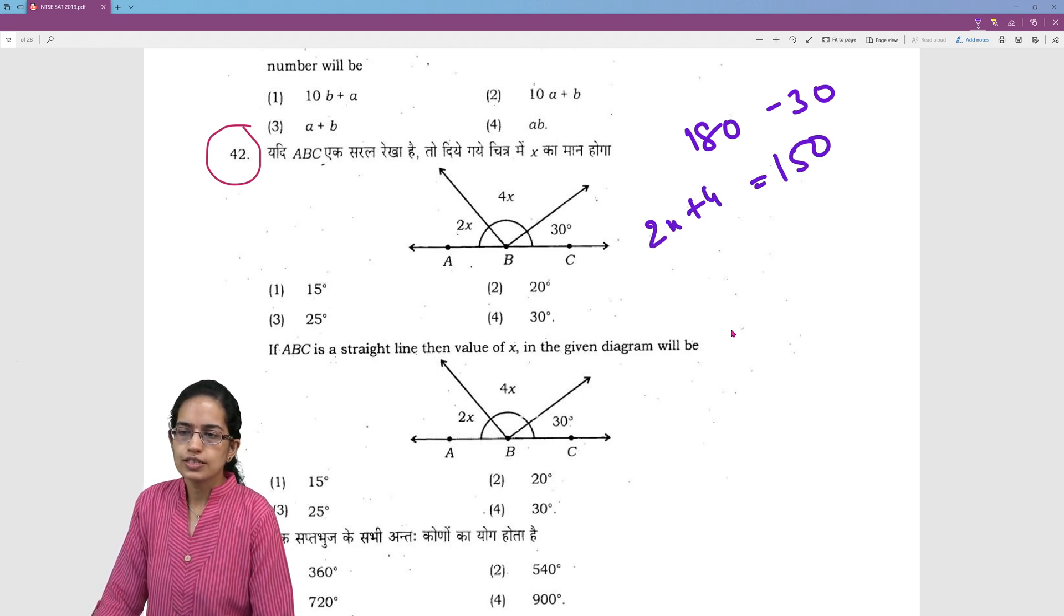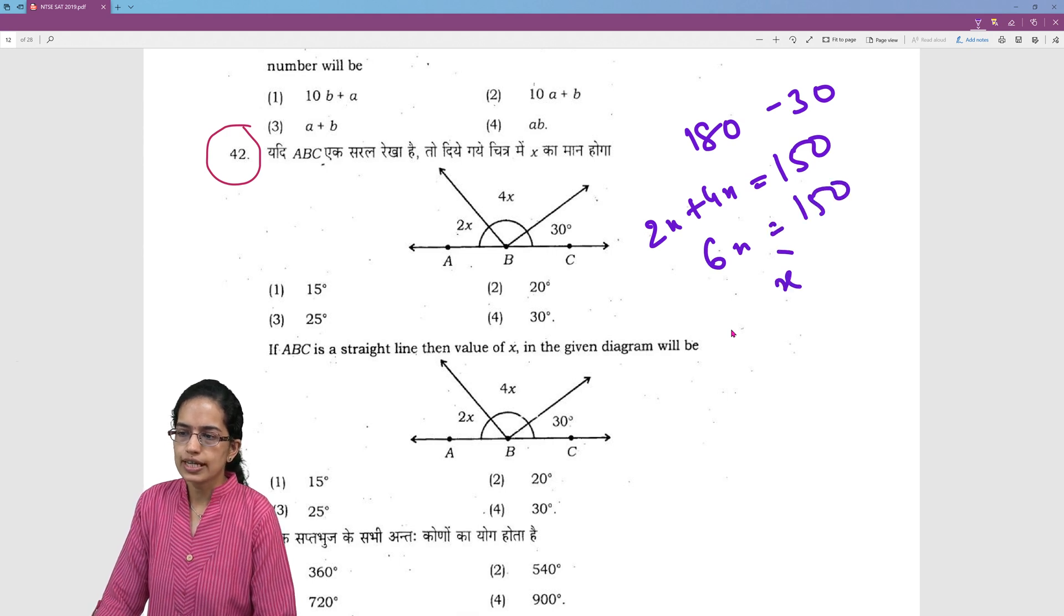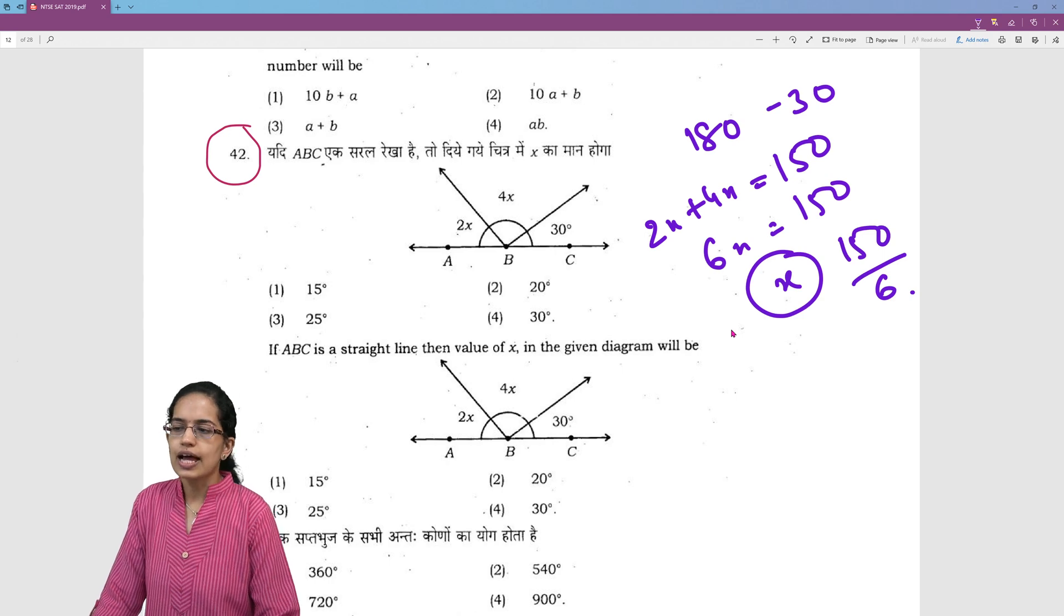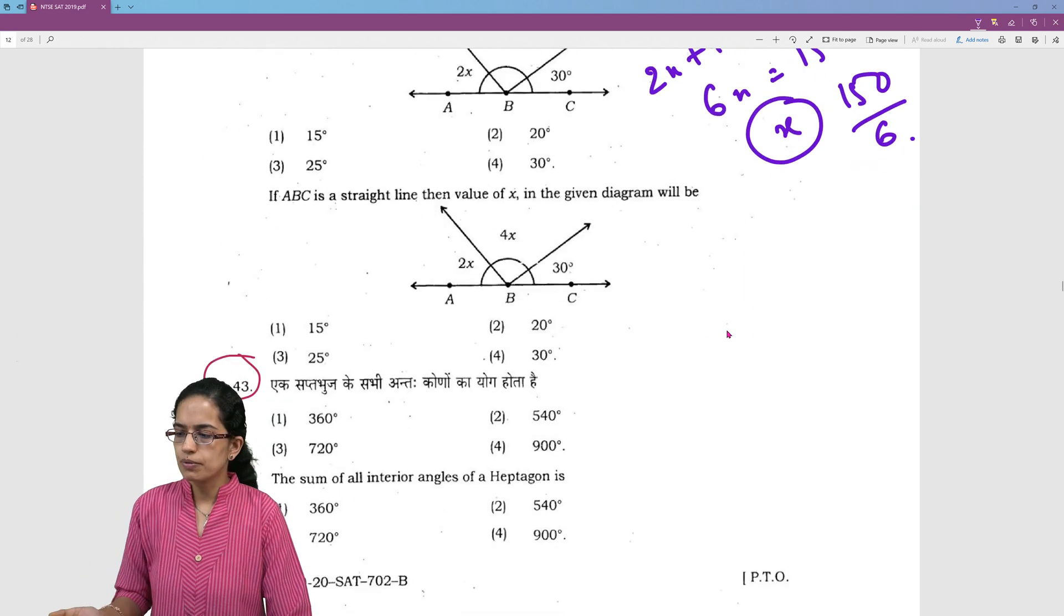2x plus 4x. So 6x is equal to 150 degree. I can simply find out the value of x which is 150 by 6 and this is a kind of most simple problem that could be there.